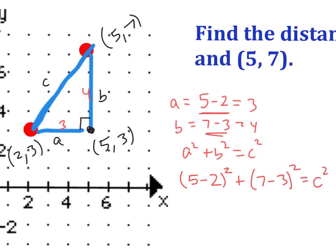We don't need c squared — we just need plain c. To get that, we take the square root of both sides. So how does this play out in terms of the distance formula?